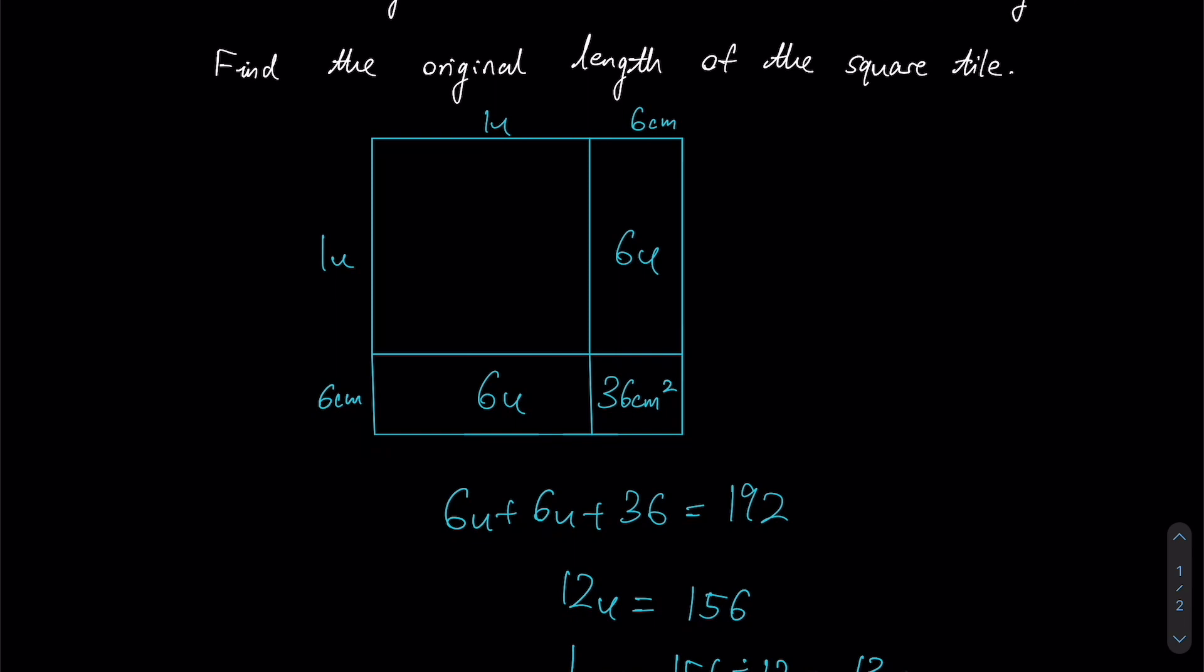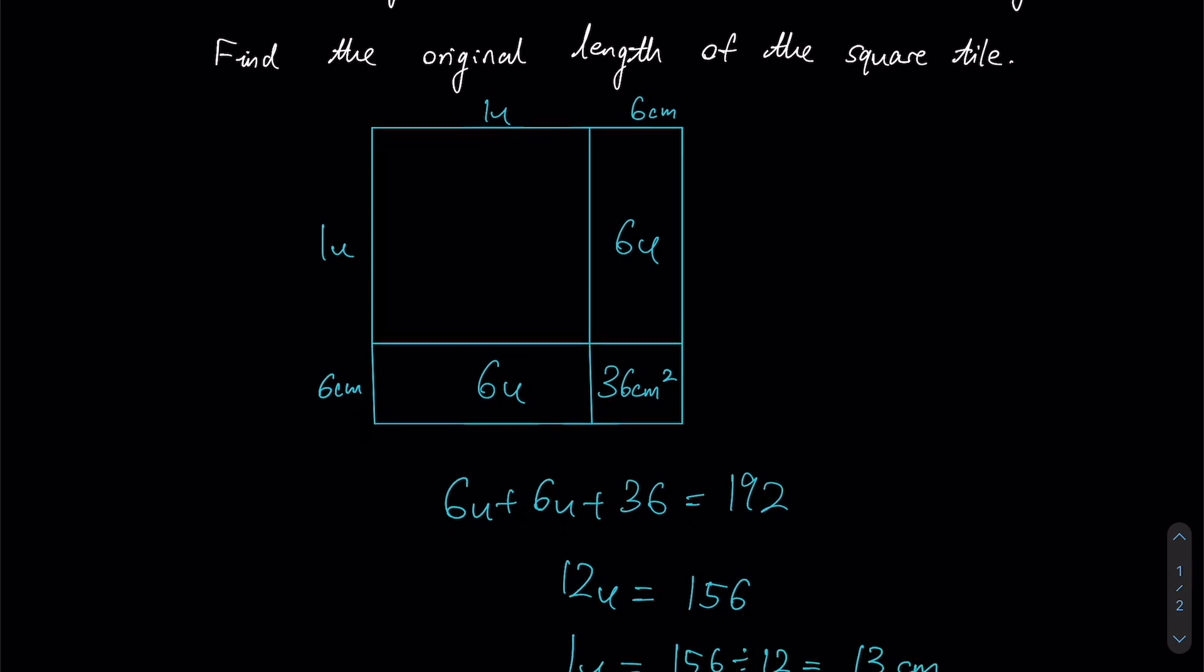So just to do a brief recap, the common misconception is that we only extend one side by 6 centimeters, and therefore some students may think that this must be the new figure. But that's not the case because notice that the other dimension here must be extended by the same amount as well.